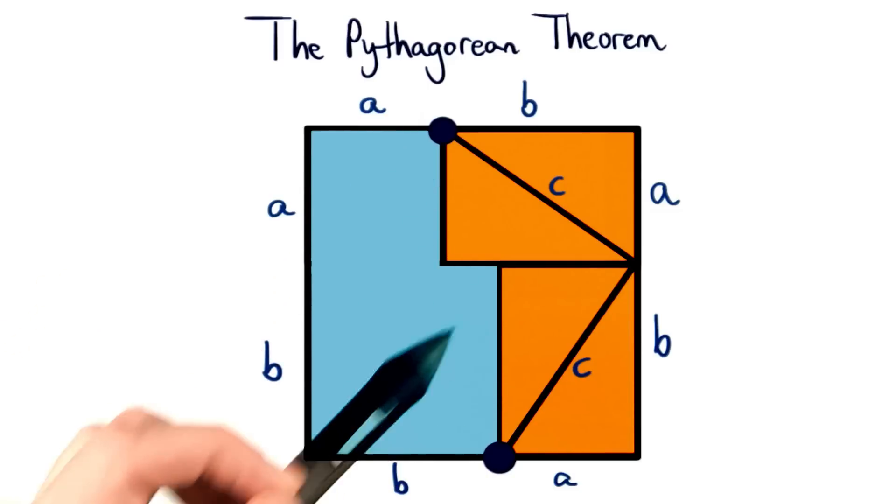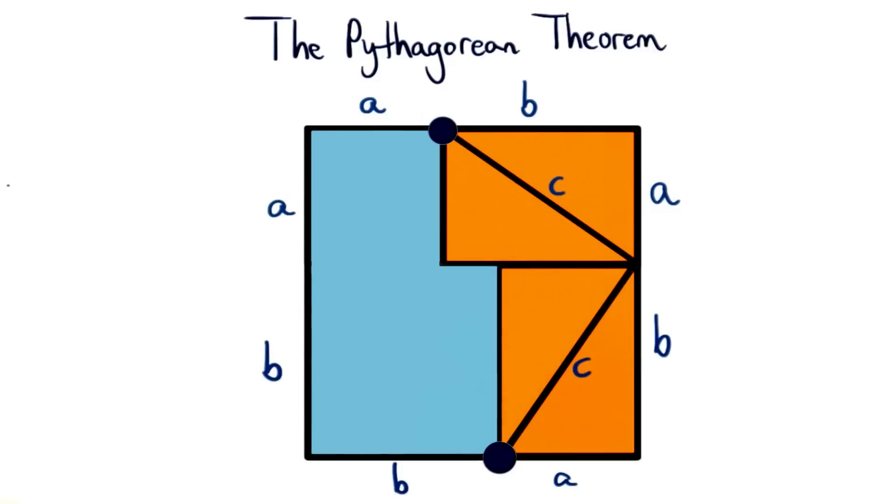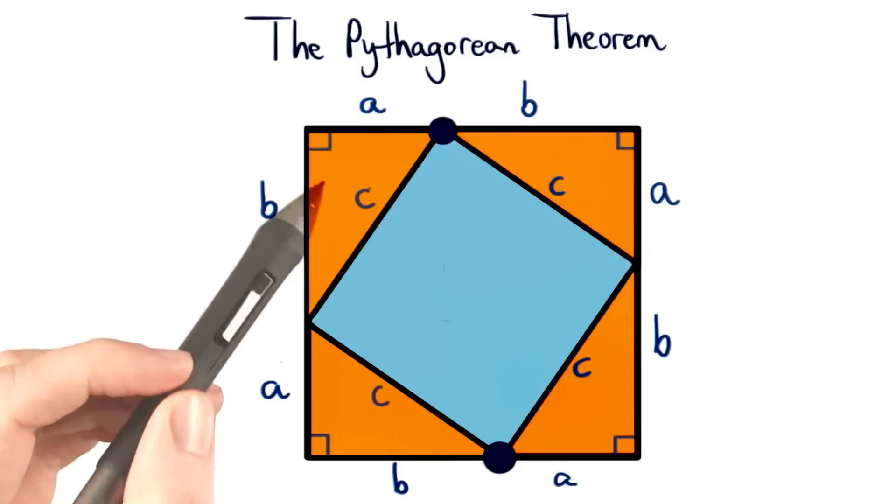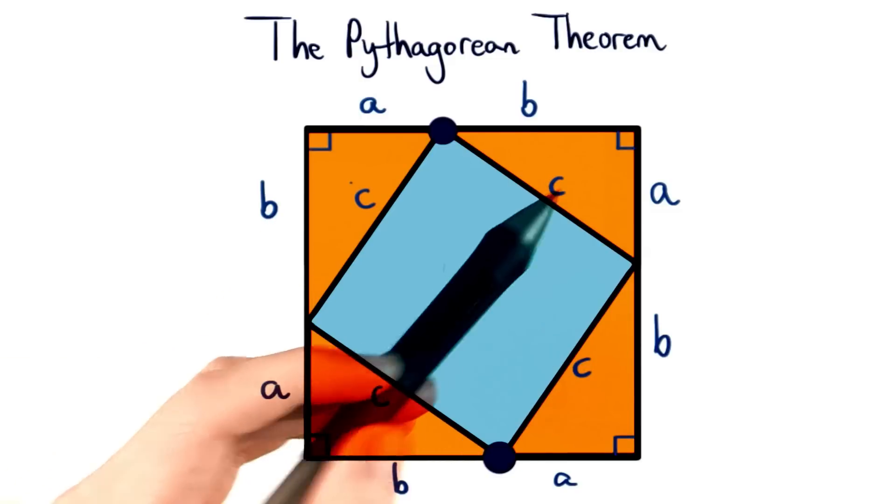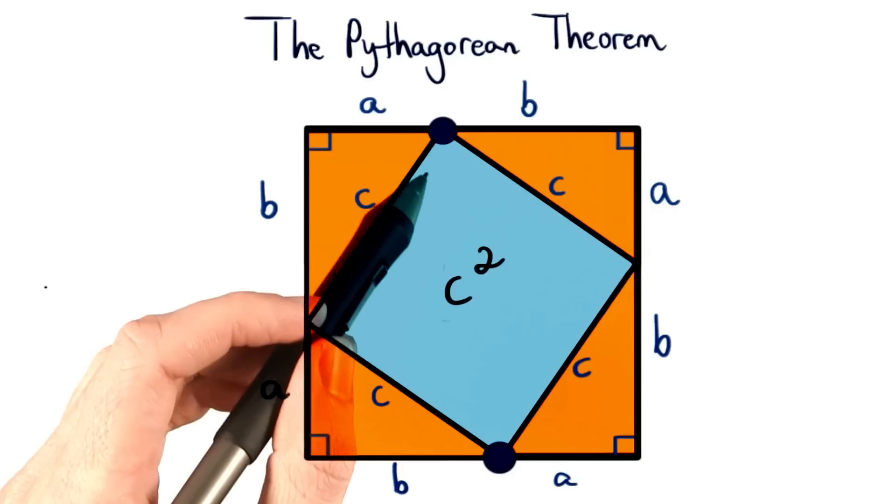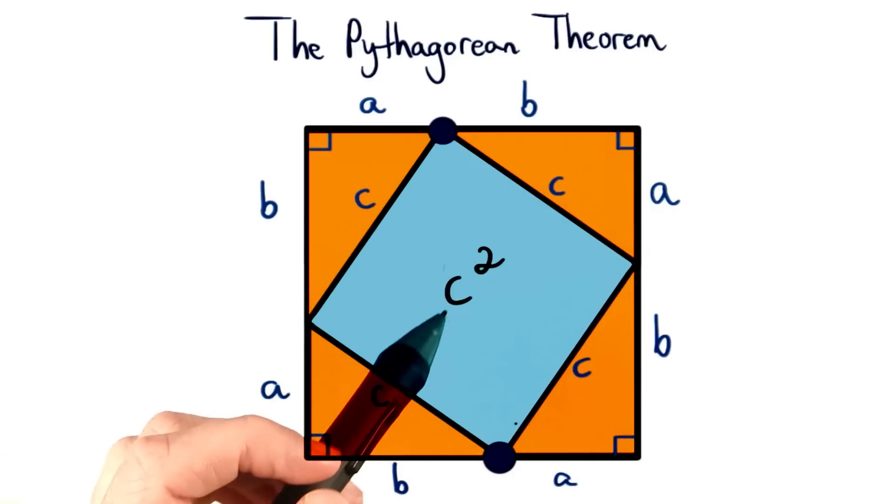and we're going to swing this triangle down around this point. When we rearrange the triangles, we get this new arrangement. Notice that I have the same four triangles with legs a and b, and a hypotenuse of c. And the area inside here is c squared.